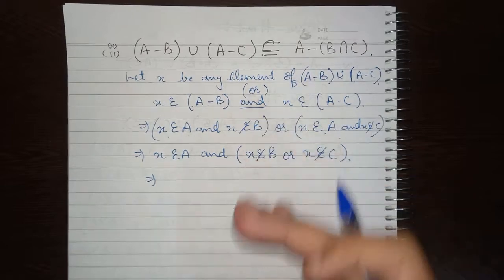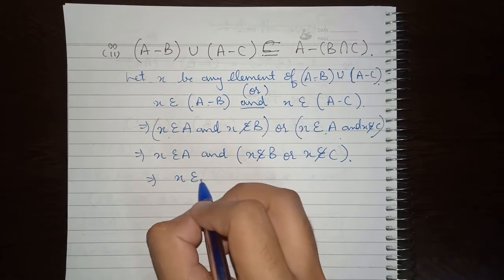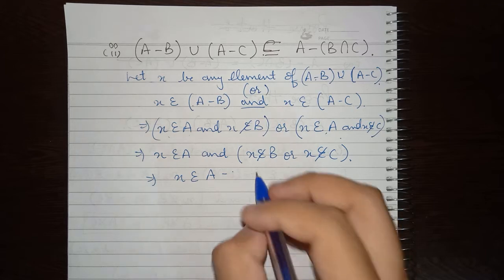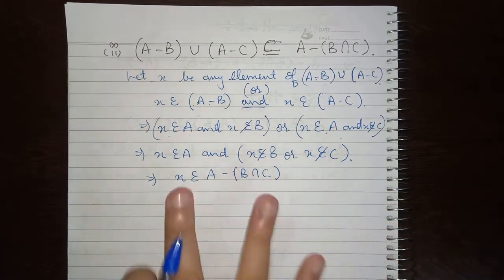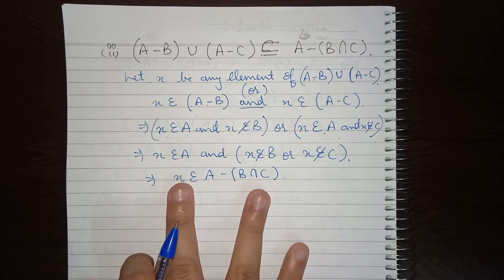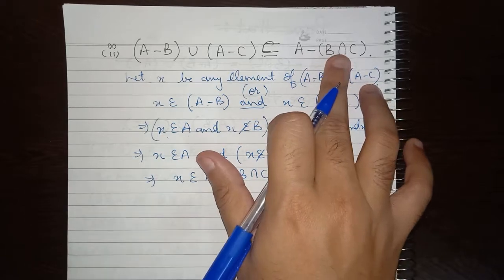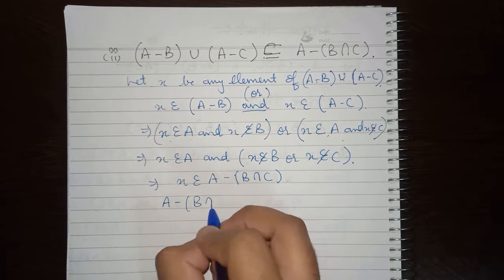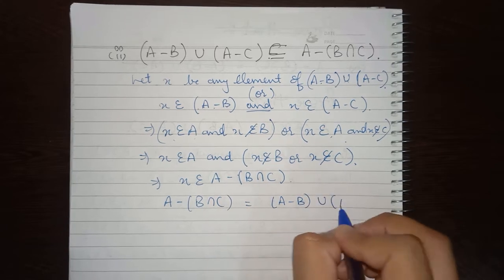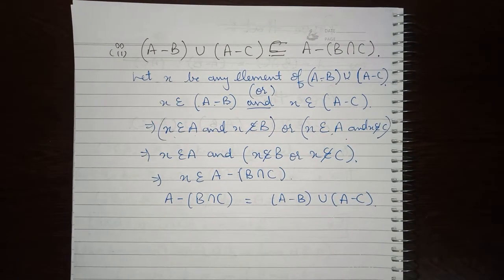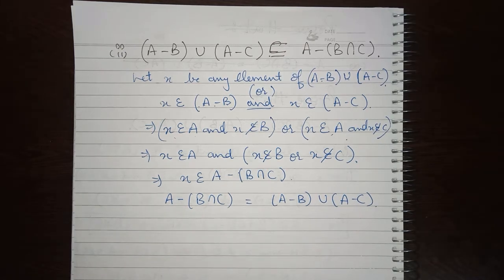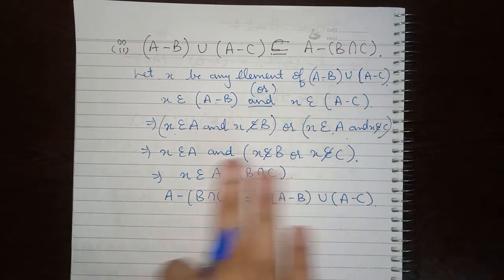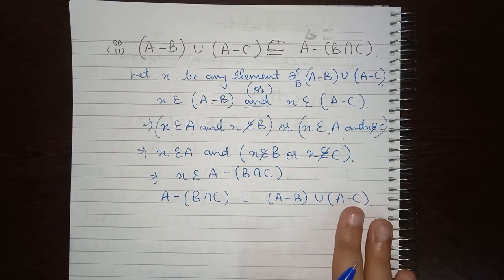Bringing back the set notation, we write this as X belongs to A minus (B intersection C). So we have proved the right-hand side is a subset of the left-hand side, and therefore A minus (B intersection C) equals (A minus B) union (A minus C). This was the practice problem I gave you to solve at home — I hope you have solved it and can follow the steps here.